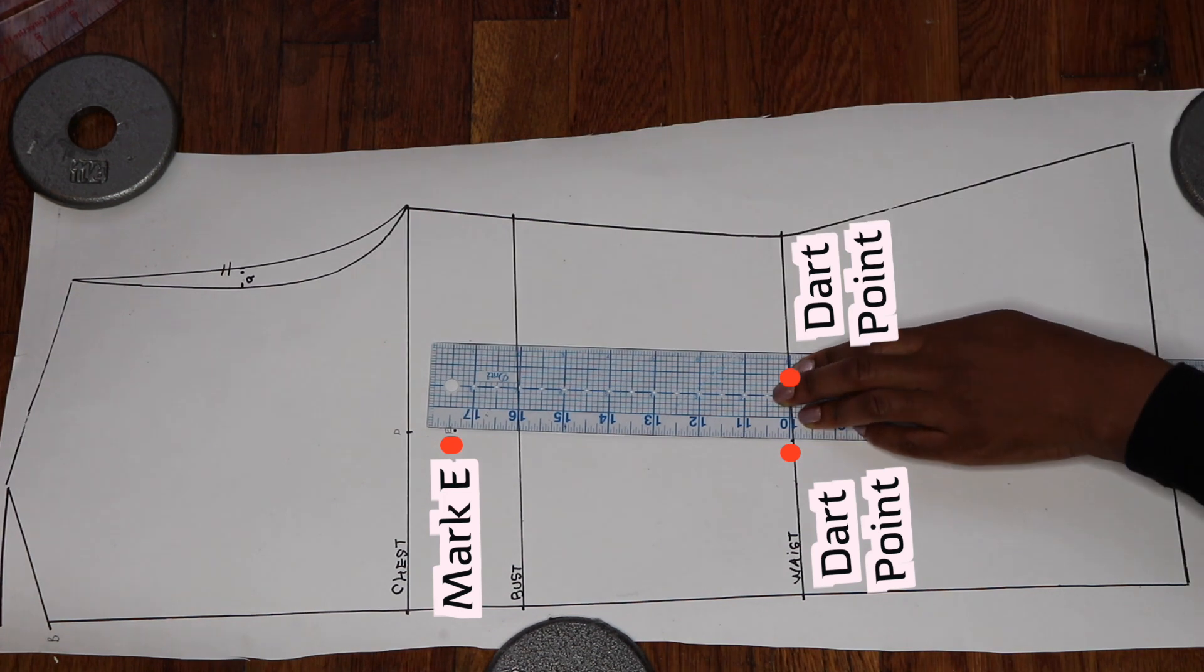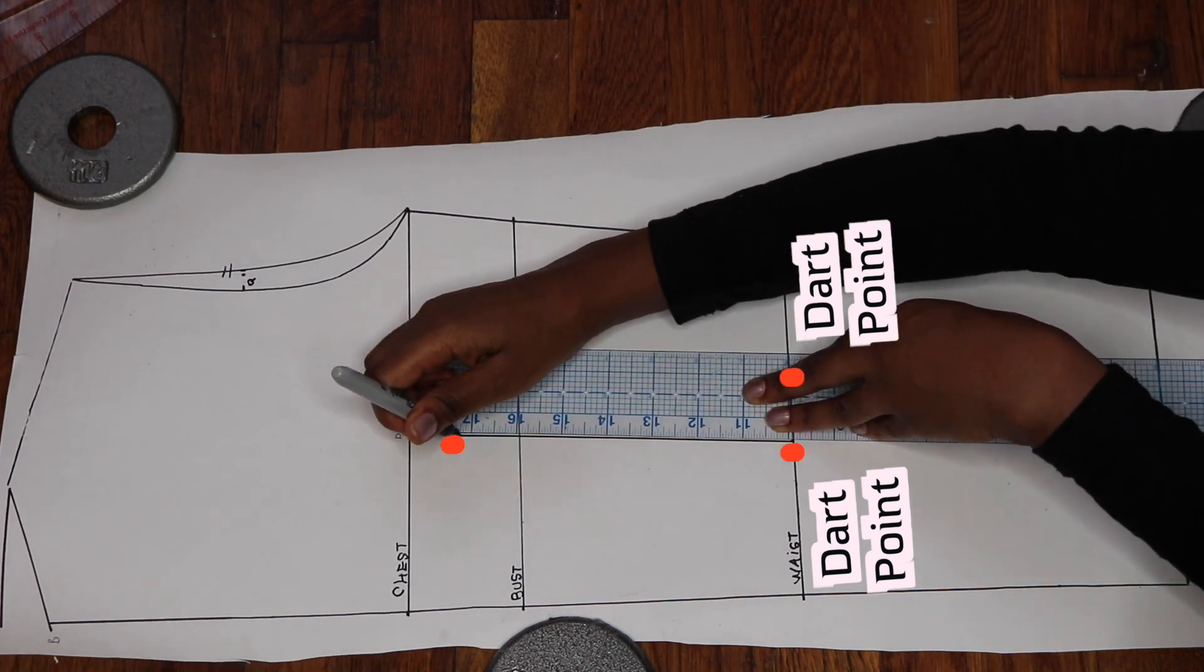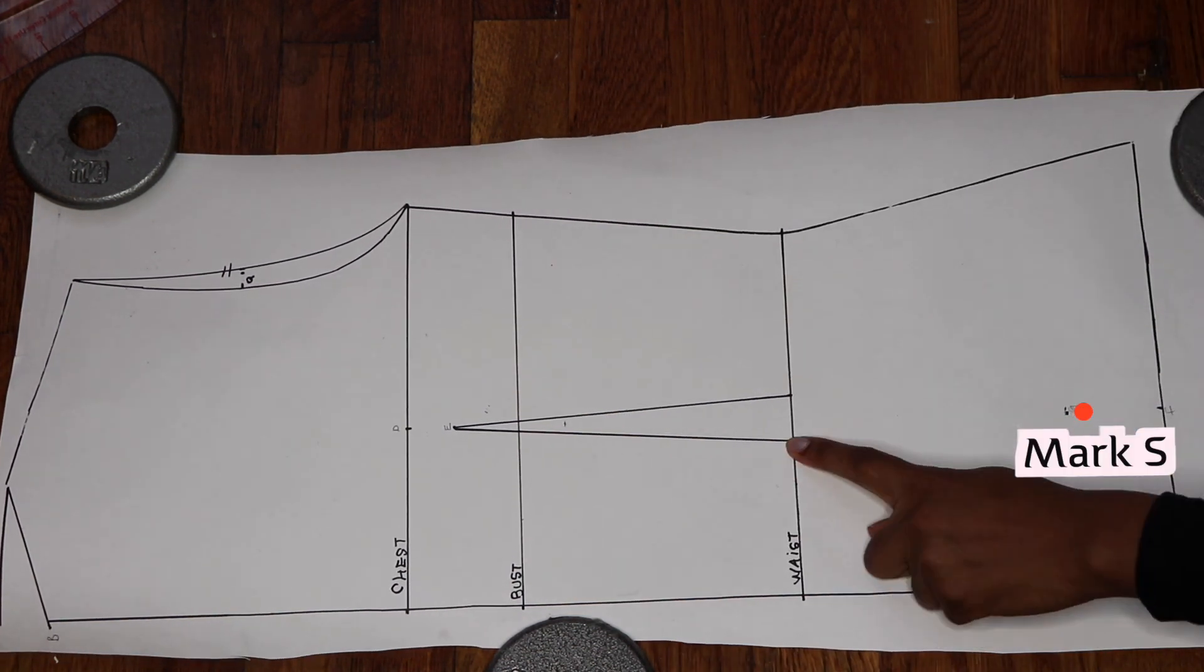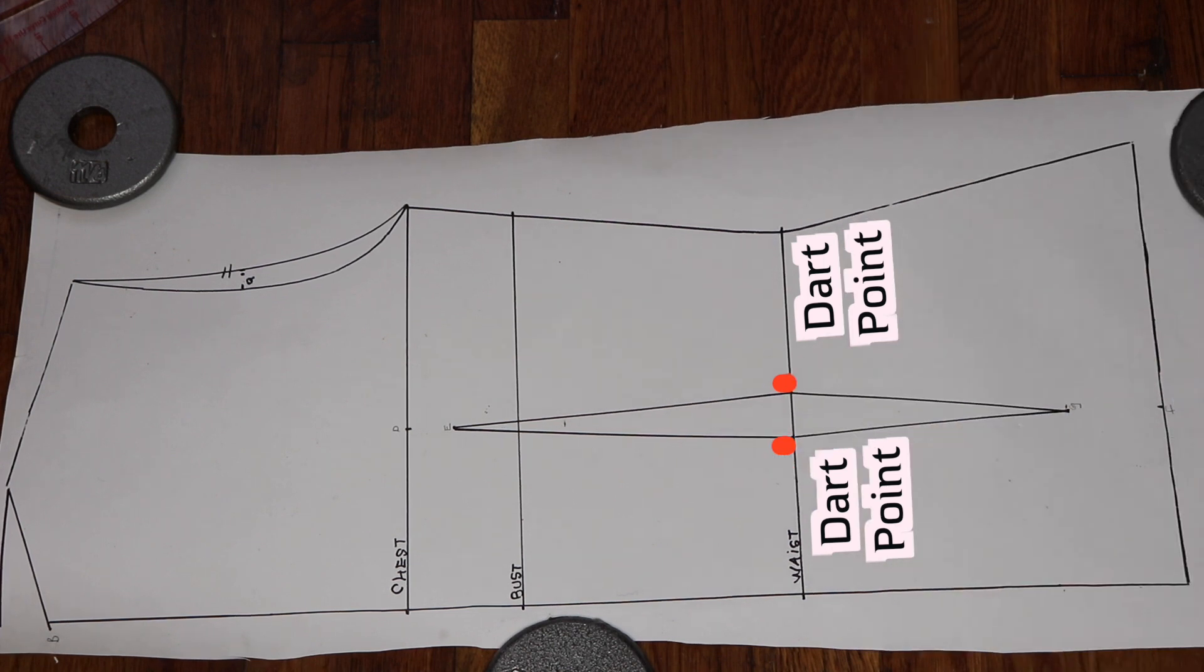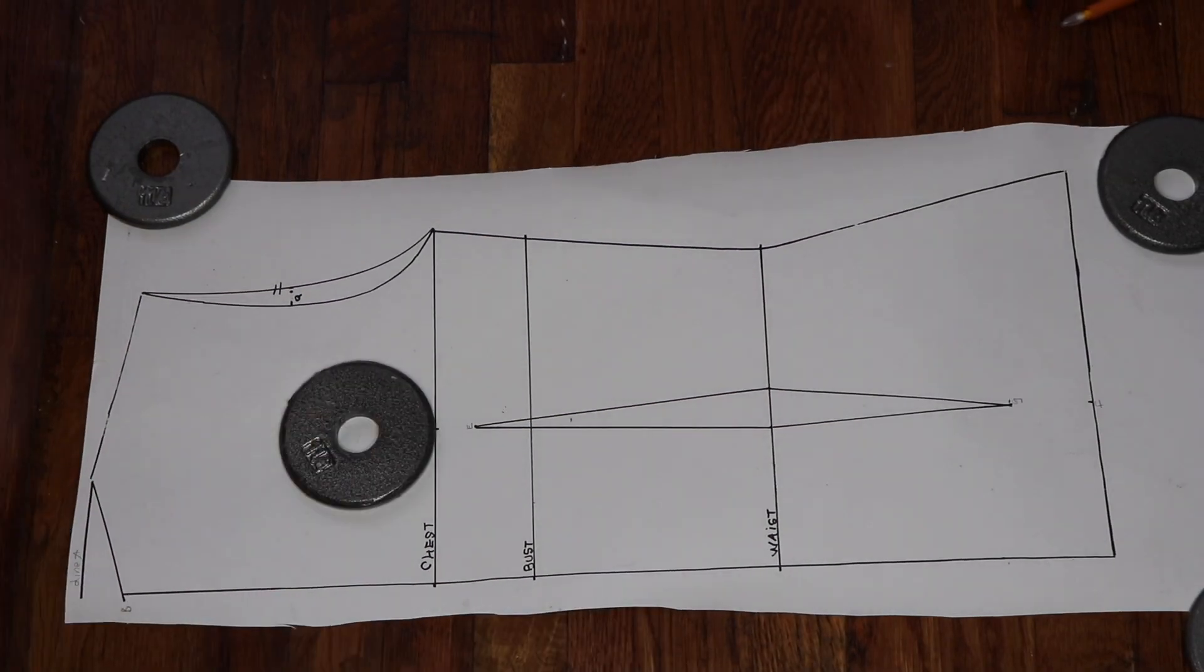Now connect mark E to each dart point to form the top of your dart. To form the bottom of your dart, connect mark S to each dart point as well.